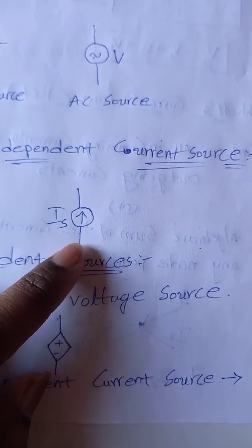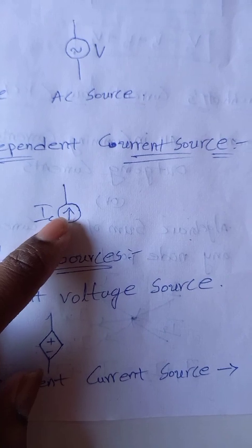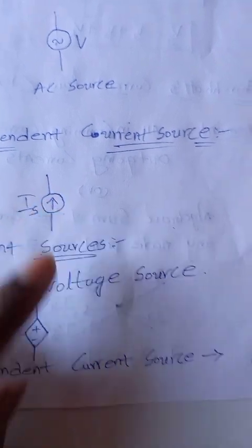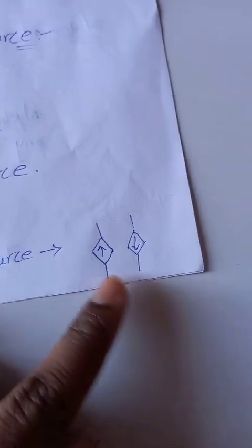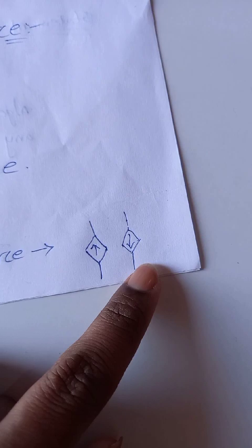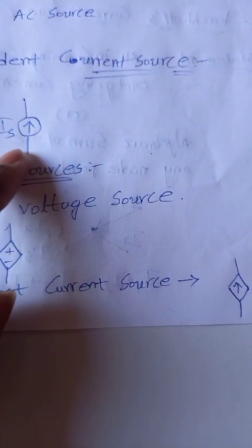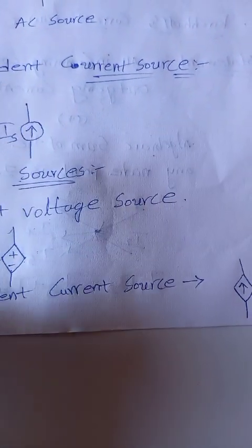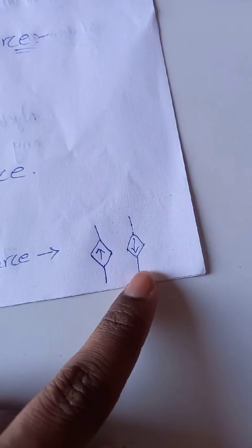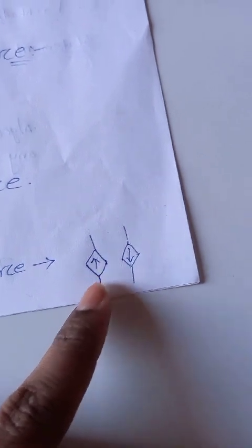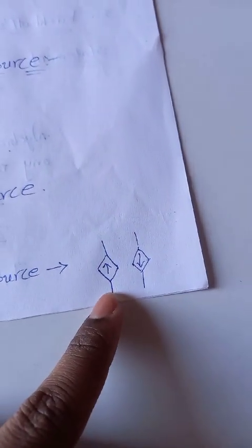The flow of current arrow mark can be upside or downward depending on direction. If we represent the independent source, we use a circular symbol. If we represent the dependent source, we use a diamond shape.